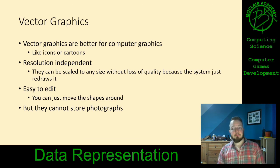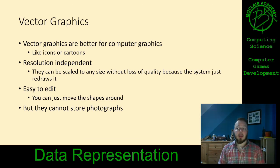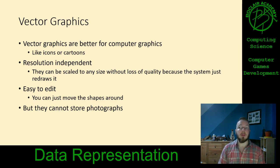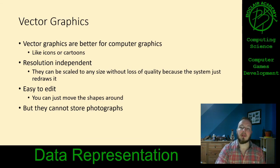Vector graphics are really easy to edit. Because they're made up of separate shapes, you can just move the shapes around, delete them, or add more very easily. Bitmap graphics, on the other hand, are more difficult — you need a fairly complex piece of software to be able to move stuff around in a bitmap graphic. But as mentioned, vectors cannot be used to store photographs, as photographs are way too complicated.